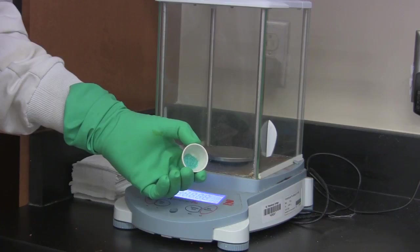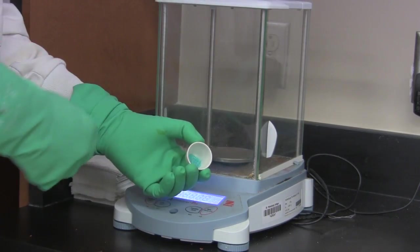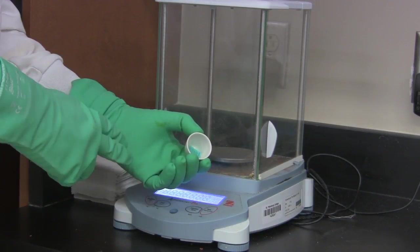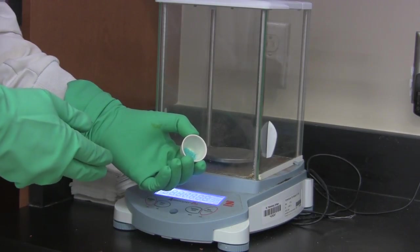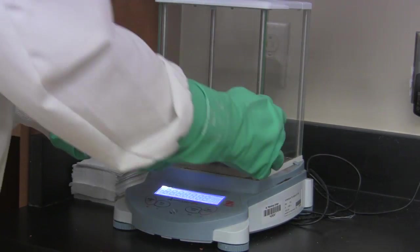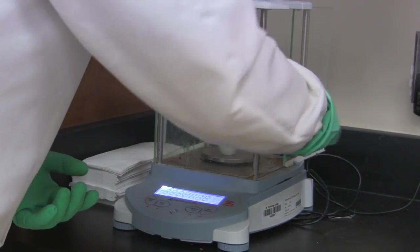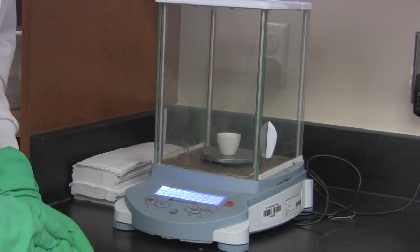Alright, so we've put our copper chloride into the crucible. And now we're going to weigh it again. Obviously, the difference between the empty crucible and this will be the amount of copper chloride hydrate that we've added. This will be weighed to four decimal places, 0.0001 grams.